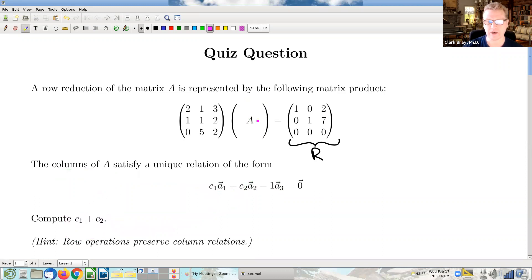Alright, so how does one do this problem? Well, the brute force, unadvisable, inadvisable way to do this problem would be to try to find the matrix A directly by inverting. You're going to invert a matrix, then you've got to multiply a couple of matrices. And then you'd have to find a relation between the column vectors. Bunch of work doing it that way.